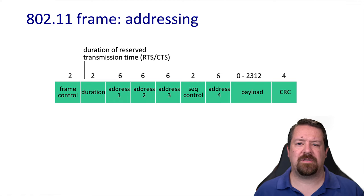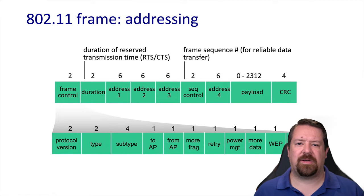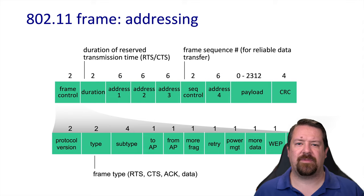There is also a duration field, used in the RTS-CTS exchange, and a sequence number, which is used to match up acknowledgements with transmissions since data frames get acknowledged. We also have two bytes of frame control, which specify things like the version of the protocol, whether encryption is being used on the link, whether this is a retry, if it's fragmented, whether the frame is destined to or coming from the access point, as well as types and subtypes of messages — differentiating control frames such as RTS, CTS, and ACK from data frames.